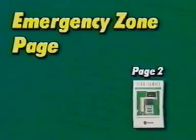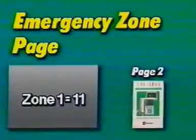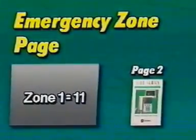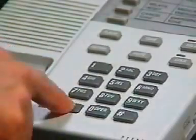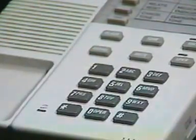Next, we'll generate an emergency zone page. Note that zones are entered as their number plus ten. For example, we enter zone one as eleven. To generate an emergency zone page, lift the handset and press pound, star. Now press one one for zone one, issue the message, then hang up.